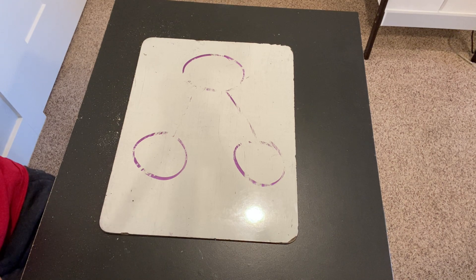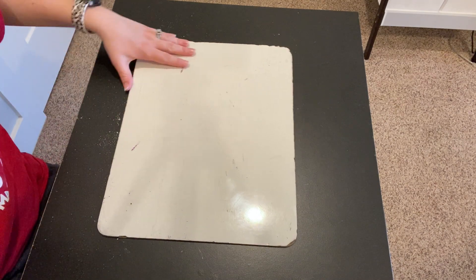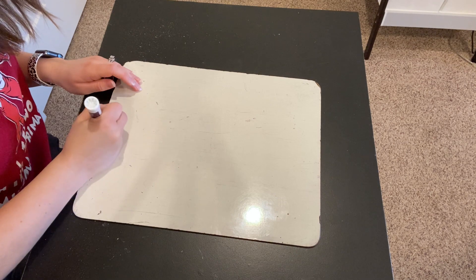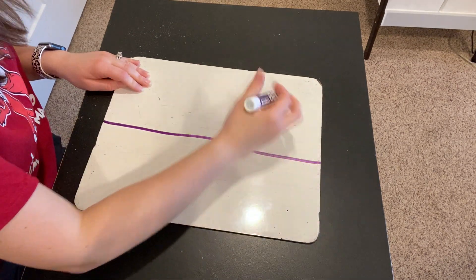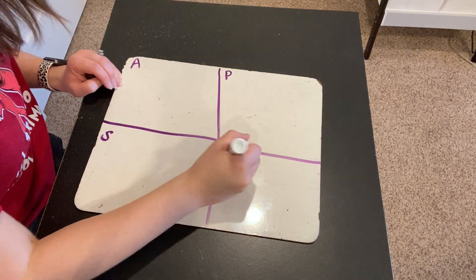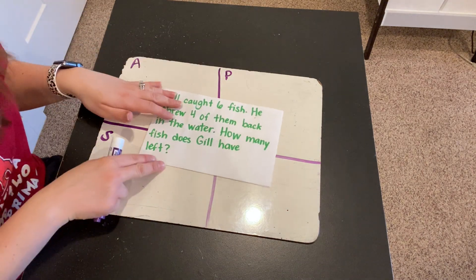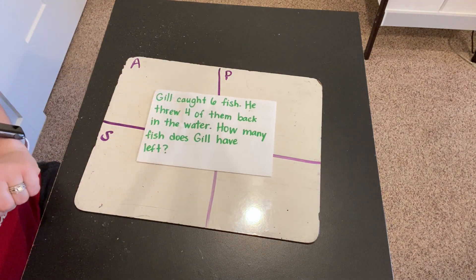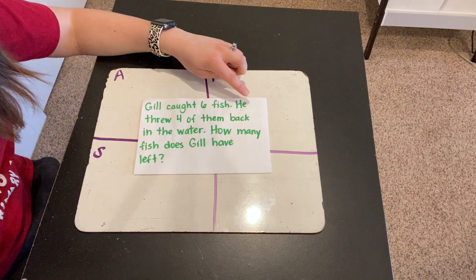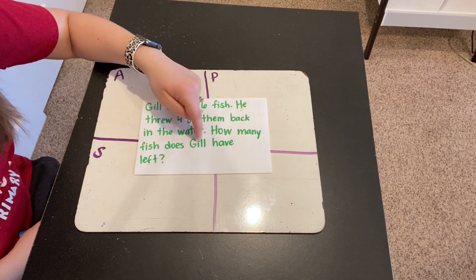We are going to move on to our word problem now. We're going to use APPS check to help us analyze, plan, solve, and check. Here's our word problem for today. Let's read it together. Gil caught six fish. He threw four of them back in the water. How many fish does Gil have left?